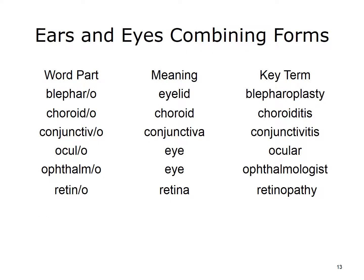Here are some key word parts related to the eyes and vision along with their meanings. In the third column, you can see some of the medical terms that we can create by combining word parts. You should return to the online medical dictionary to hear the pronunciation and become familiar with the meaning of the created terms.